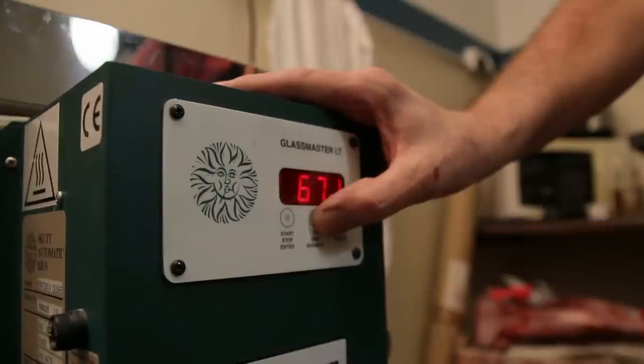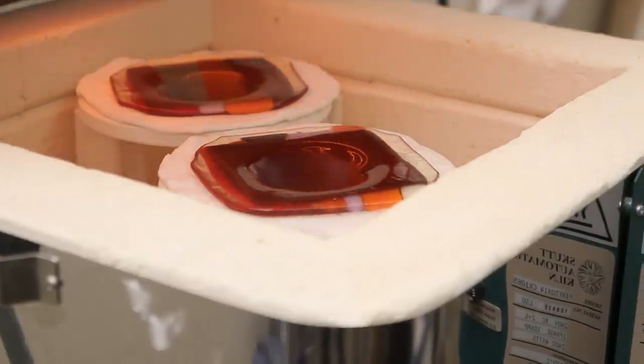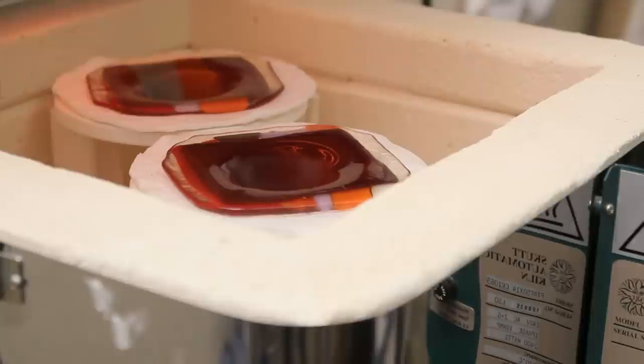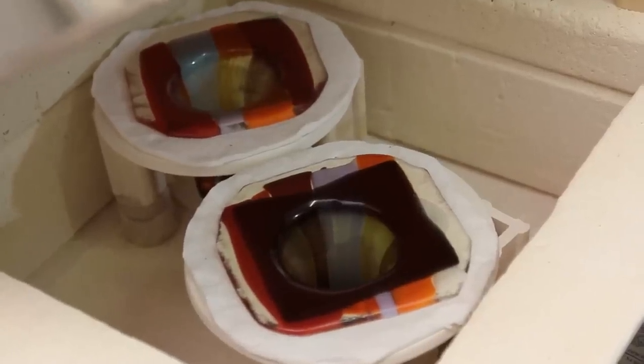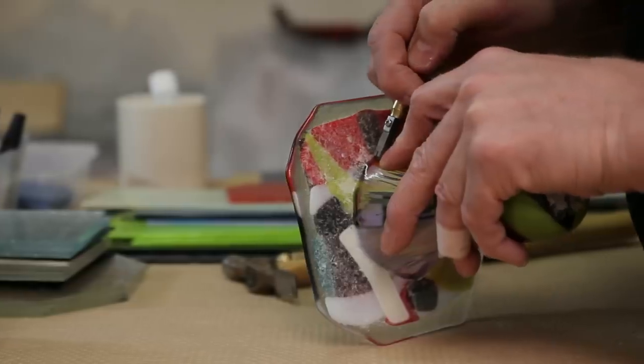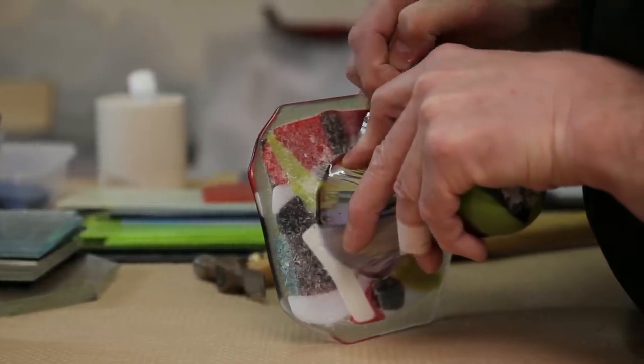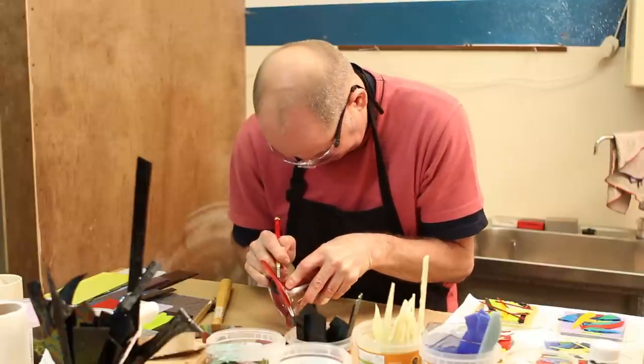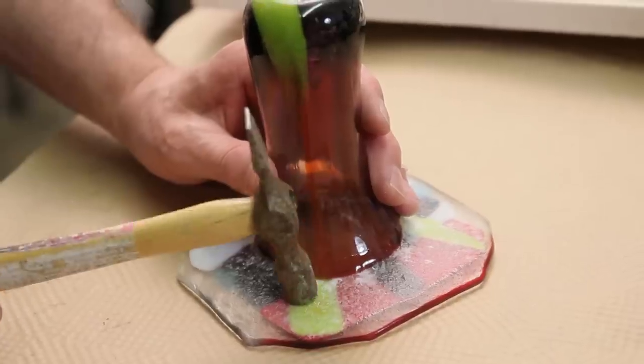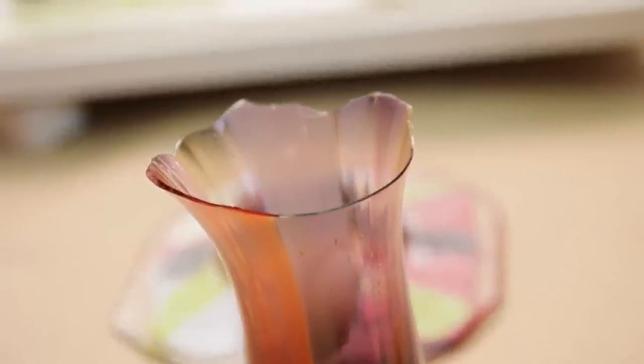And then we put them in the kiln and we work on the temperatures which produce the fusion of the glass together. The next day we take them out, and then we have the delicate process of trying to separate them off the glass slab so we have the vase left.